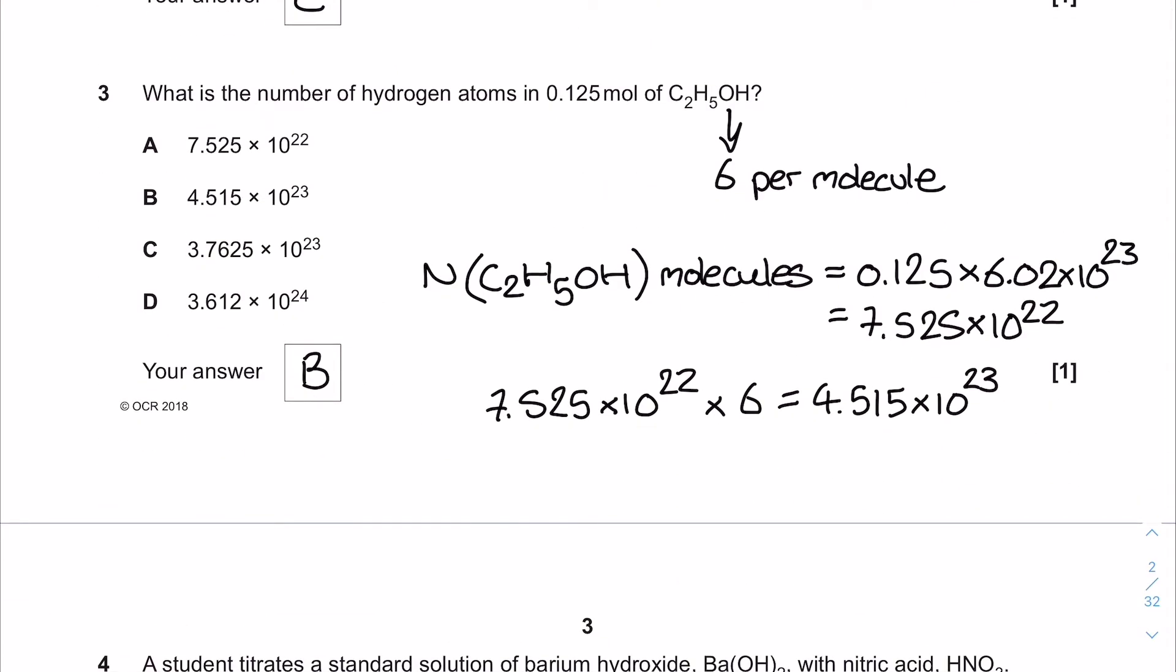Question three. What's the number of hydrogen atoms in 0.125 mol of ethanol? I need to figure out how many atoms of hydrogen there are per molecule - that's six. Then using the mole value and Avogadro's number, I figure out the number of ethanol molecules and multiply that value by six. My correct answer is B from the table.